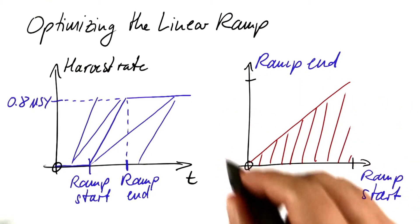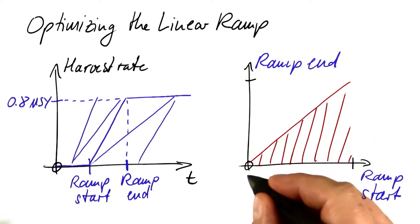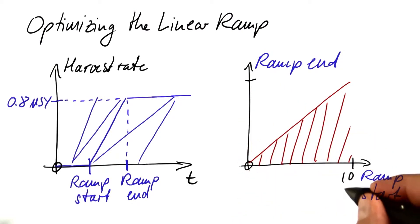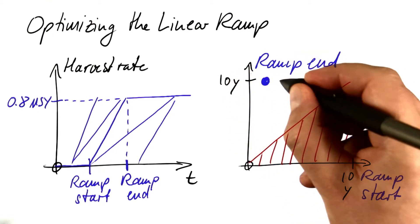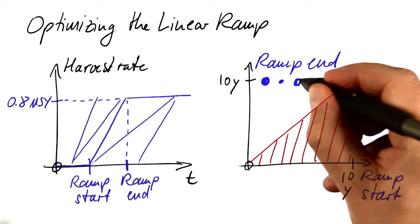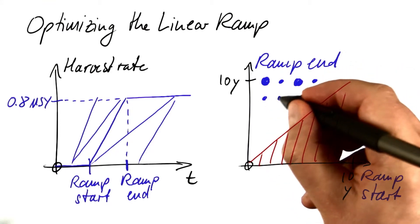And what our program will be doing: it will be varying both parameters between 0 and 10 years, only in the allowed region, and it will put blue dots in that region that show the total amount of harvest for all of these combinations of parameters.